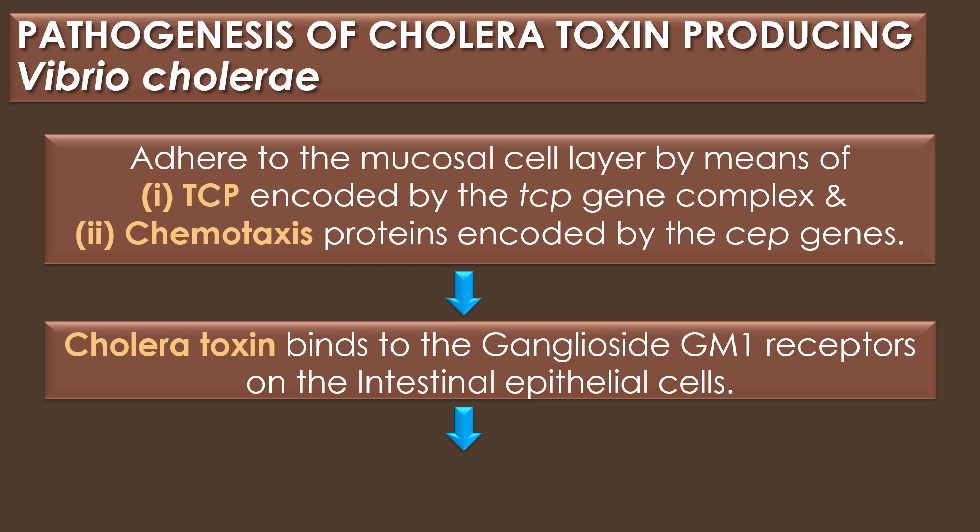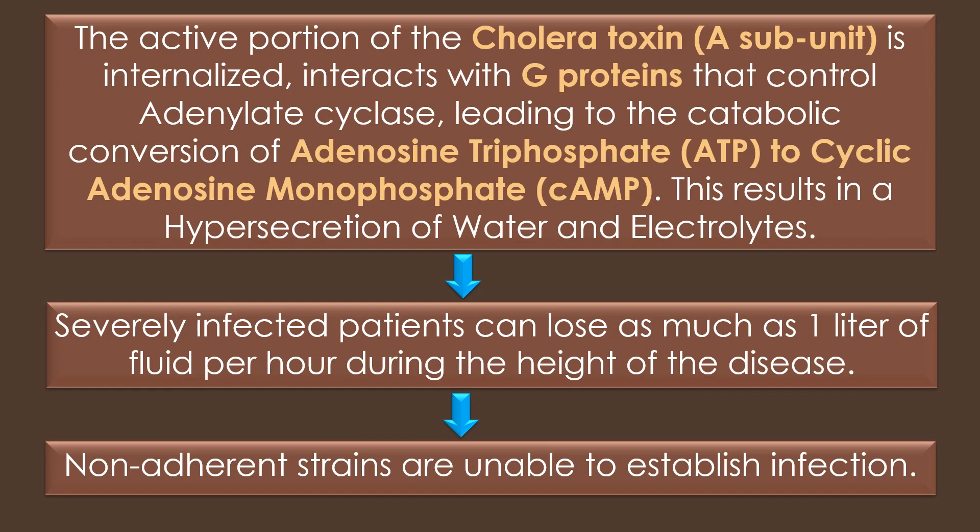Cholera toxin binds to the ganglioside GM1 receptor on the intestinal epithelial cells. After binding of the cholera toxin with the ganglioside GM1 receptors, the active portion of the cholera toxin — that is, the A subunit — is internalized and interacts with G proteins that control adenylate cyclase, leading to the catalytic conversion of adenosine triphosphate (ATP) to cyclic adenosine monophosphate (cAMP). This results in hypersecretion of water and electrolytes.